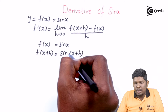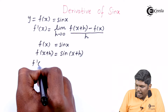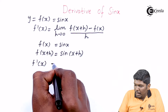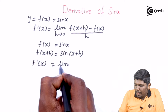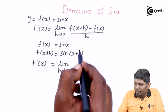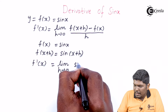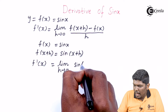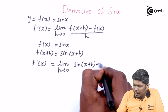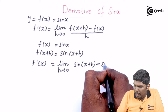Now both f of X and f of X plus H are ready, so we substitute these two values in the formula. f dash X, the first derivative, will be: limit h tending to 0, sine of X plus H minus sine X, upon H.